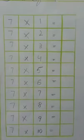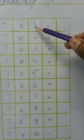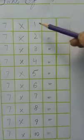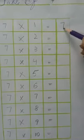7 ones are 7. We need to count 7 one time. So when we count 7 one time, it remains 7. It means 7 ones are 7.